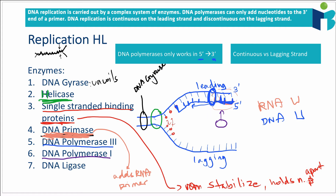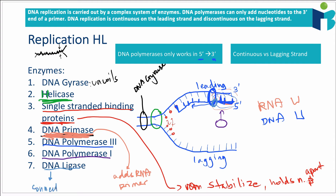We're almost done — we almost have a complete strand. The only thing left is to seal the nick, the connection between the nucleotides just added by DNA polymerase I and the replicated strand. We need to form a phosphodiester bond between those two nucleotides, and this is done by DNA ligase. DNA ligase seals the nicks — it connects the nucleotides together.